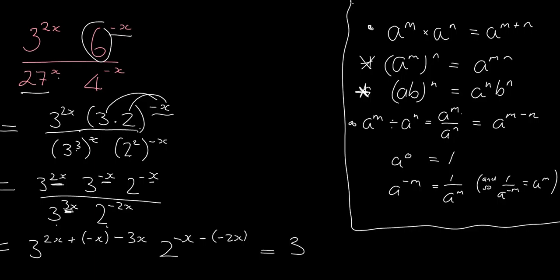And now I can simplify this nicely. 2x minus x is x, and x minus 3x is minus 2x. And here I'll have minus x plus 2x, which gives me x. And if I want to write everything nicely with positive exponents, this will become 2 to the x. And this because of that negative 3 to the 2x.